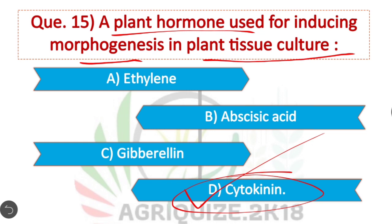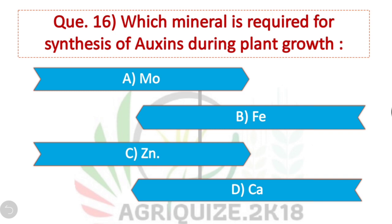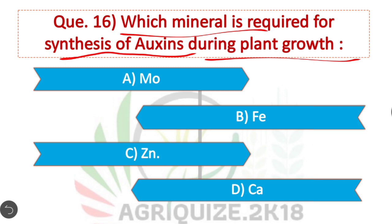Question 16: Which mineral is required for synthesis of auxin during plant growth? Zinc is essential for the synthesis of auxin during plant growth. Option C is correct.